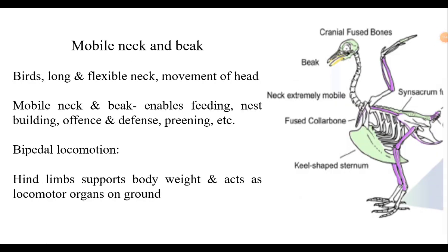Birds have a mobile neck and beak. The transformation of forelimbs into wings is compensated by the presence of the beak or bill, which is used for feeding, nest building, preening, as well as offensive and defensive purposes. The mouth is drawn out into a horny beak which acts as a pair of forceps in picking up things and various other activities such as nest building and pruning, which are commonly done by forelimbs in other animals. The neck is also very long and flexible for the movement of the head, which is necessary for various functions.